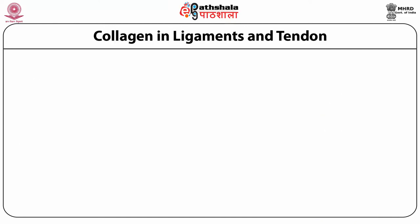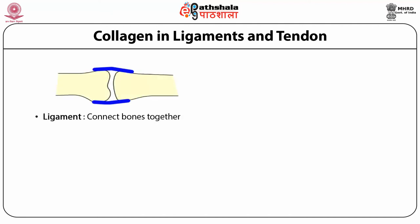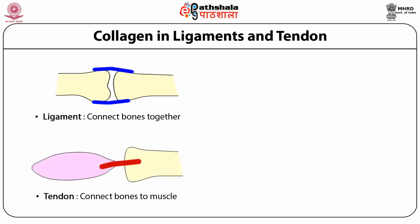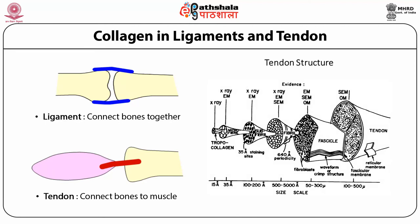Collagen fibers are prevalent in ligament and tendon. In a ligament, collagen connects two bones together, whereas in a tendon it connects bone to muscle. Looking at the hierarchical structure of a collagen fiber forming a tendon, you can see different length regimes. You start with tropocollagen, which is around 1.5 nanometers, and then it assembles into microfibril, subfibril, fibril, and eventually tendon.